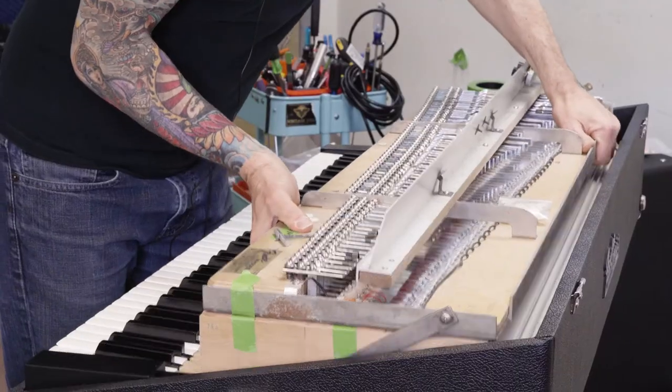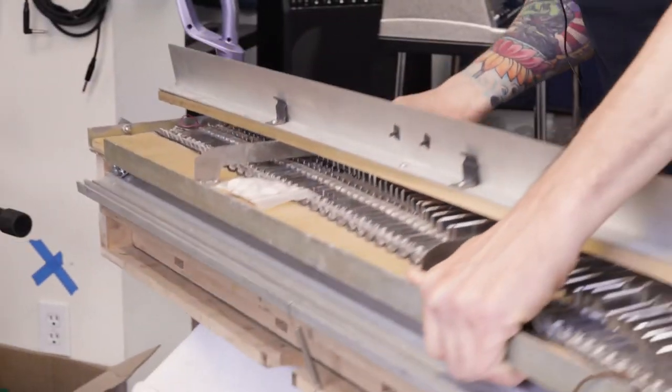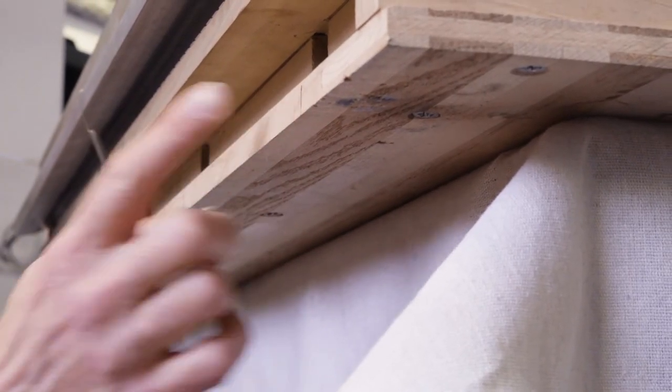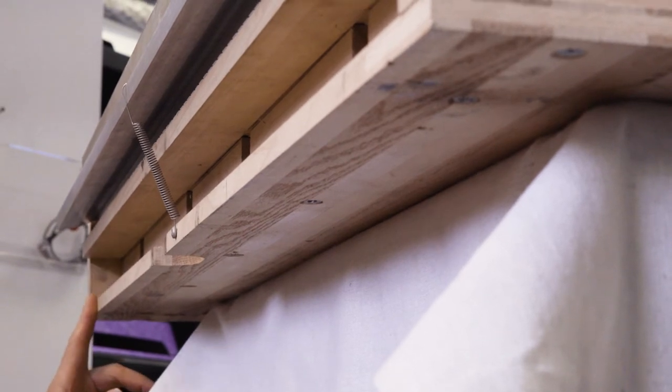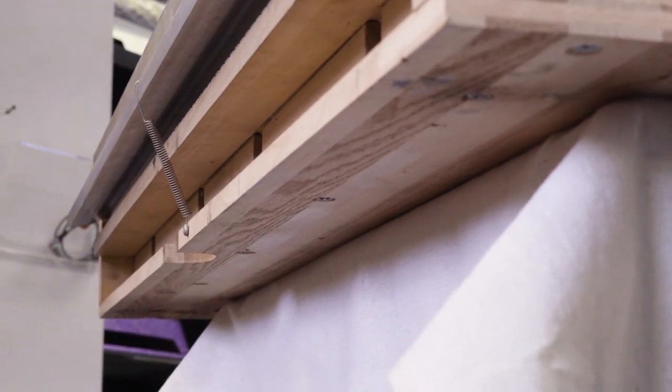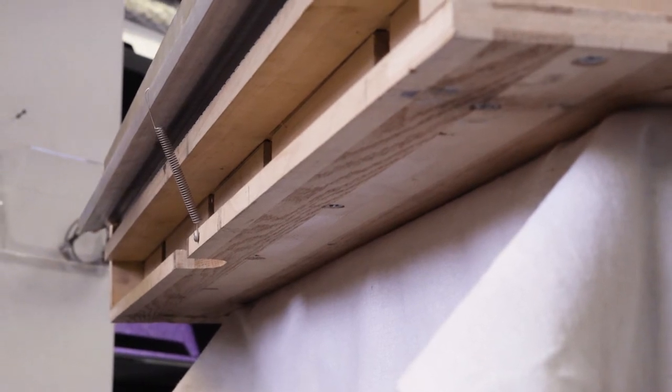Okay so what we've done, we've removed the case and now we're going to shim the action rail. The screws are located here, here, here, here and here. There's five of them and what we're going to do is we're going to loosen them and we're going to install action rail shims.